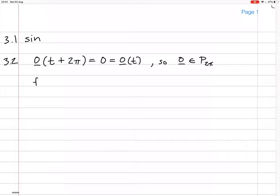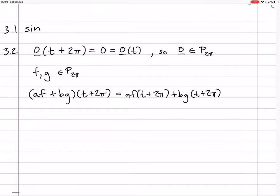And now linear combinations, closed under linear combinations. So, we take f and g in P2π, now we want to look at af plus bg at t plus 2π. Well, it equals af at t plus 2π, but since f and g are in P2π, so they're 2π periodic, then we have af of t plus bg of t.